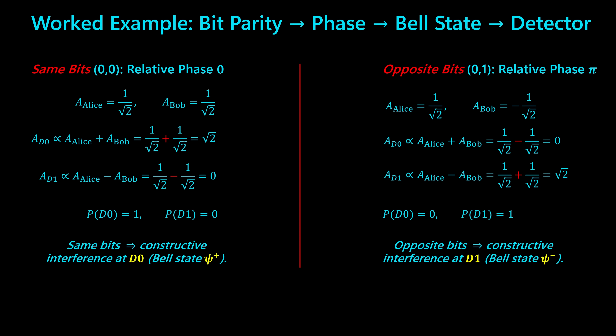On the right side, consider the opposite-bit case where Alice still sends 0 but Bob sends 1. Because Bob's bit is different, his mode carries a pi phase shift relative to Alice's, which shows up as a minus sign in the amplitude. Now when these amplitudes interfere at the beam splitter, the situation flips: along the D0 output, the amplitudes cancel — 1/√2 − 1/√2 = 0. Along the D1 output, the amplitudes add — 1/√2 + 1/√2 = √2. After normalization, the probability at D0 is 0 and at D1 is 1. This outcome corresponds to the anti-symmetric Bell state psi-minus, and it is the signature of constructive interference at detector D1 when the bits are opposite.